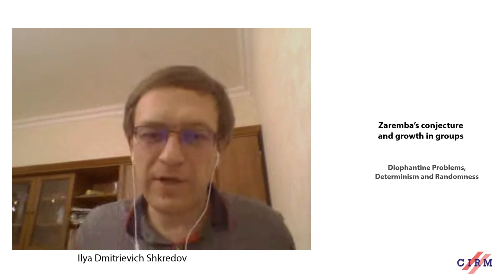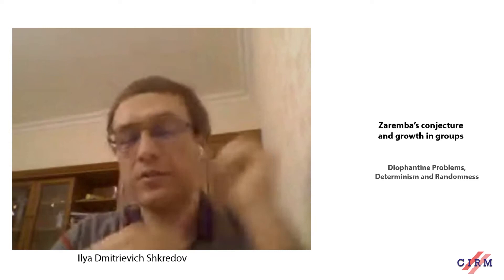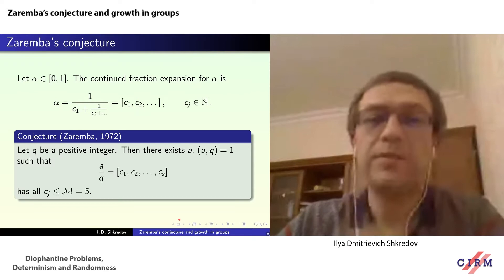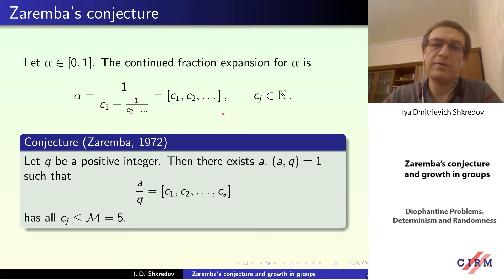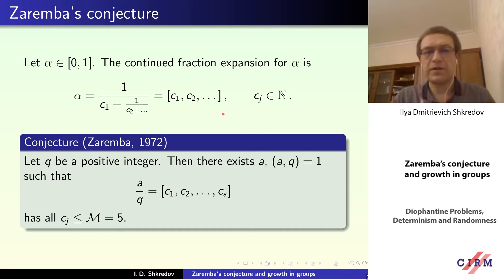Thank you very much, thank you for the invitation. I want to say a few words about the connection between Zaremba's conjecture and growth in groups. First of all, let me revive this rather well-known conjecture from the theory of continued fractions. We consider the continued fraction expansion in the following expression, where the partial quotients are positive integers, and Zaremba's conjecture asks the following questions.